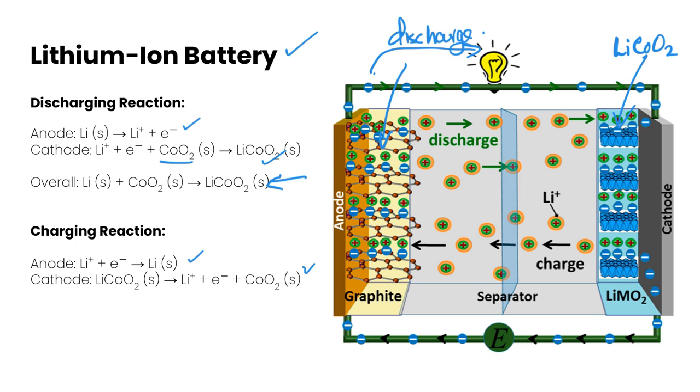So those are secondary cells we got two examples lead acid battery and a lithium-ion battery that's it for this video we'll see you in the next one.